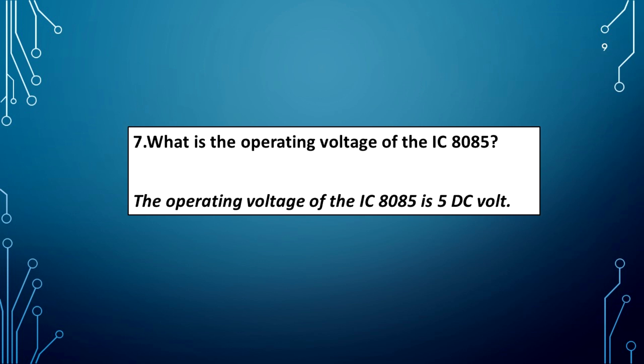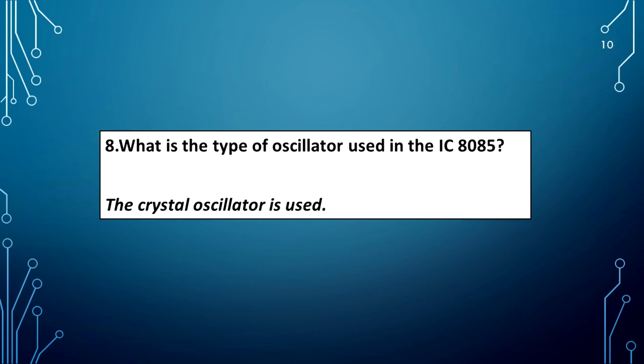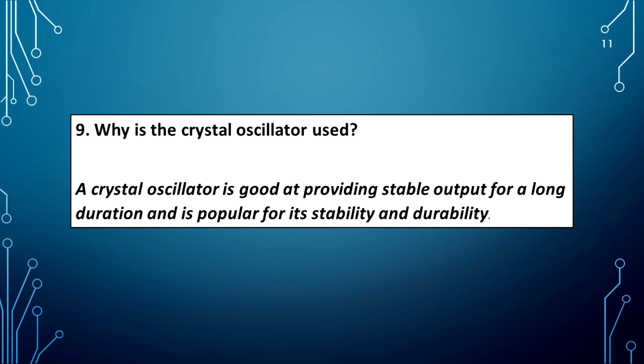What is the operating voltage of the IC8085? The operating voltage of the IC8085 is 5 DC volt. What is the type of oscillator used in the IC8085? The crystal oscillator is used. Why is the crystal oscillator used? A crystal oscillator is good at providing stable output for a long duration and is popular for its stability and durability.